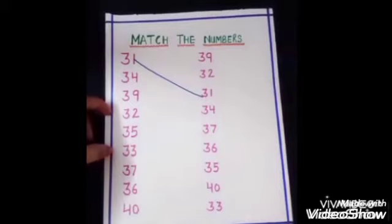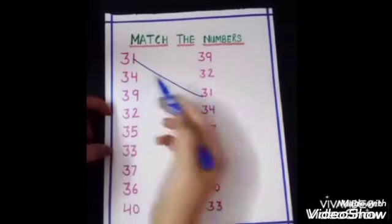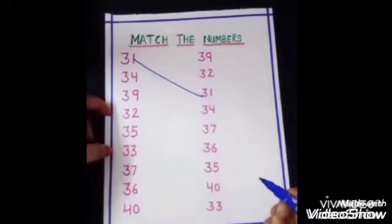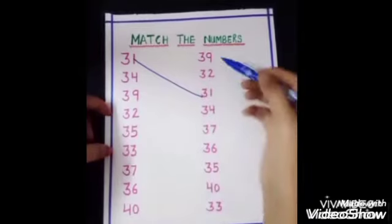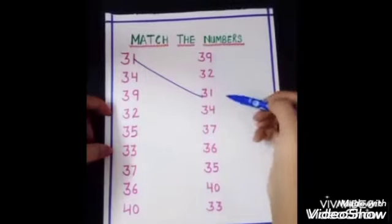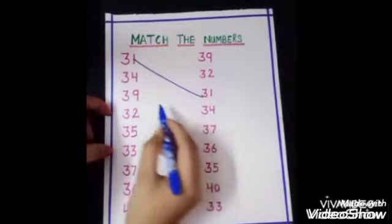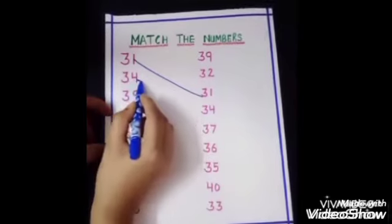Now, next number is 34, 34. Where is 34 in another line? Yes, this is 34, 34. So match it.